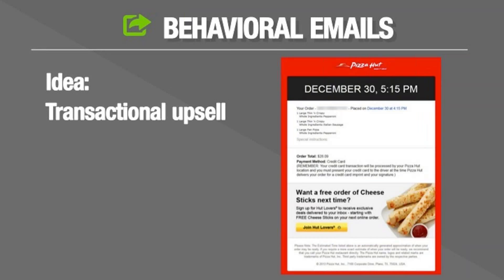What about a transactional upsell? You purchased product A — people that purchased product A find value in exploring something along the lines of product B. Our friends at Jimmy John's are huge on this. I order sandwiches often from them, and after that sandwich is delivered I get some sort of coupon in my email inbox for a next purchase. Huge. Invaluable.